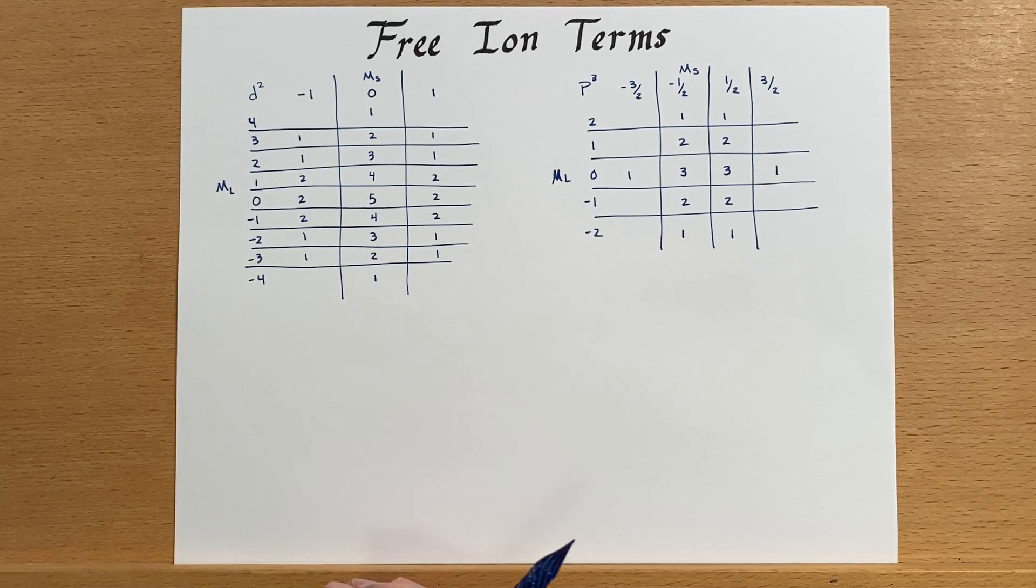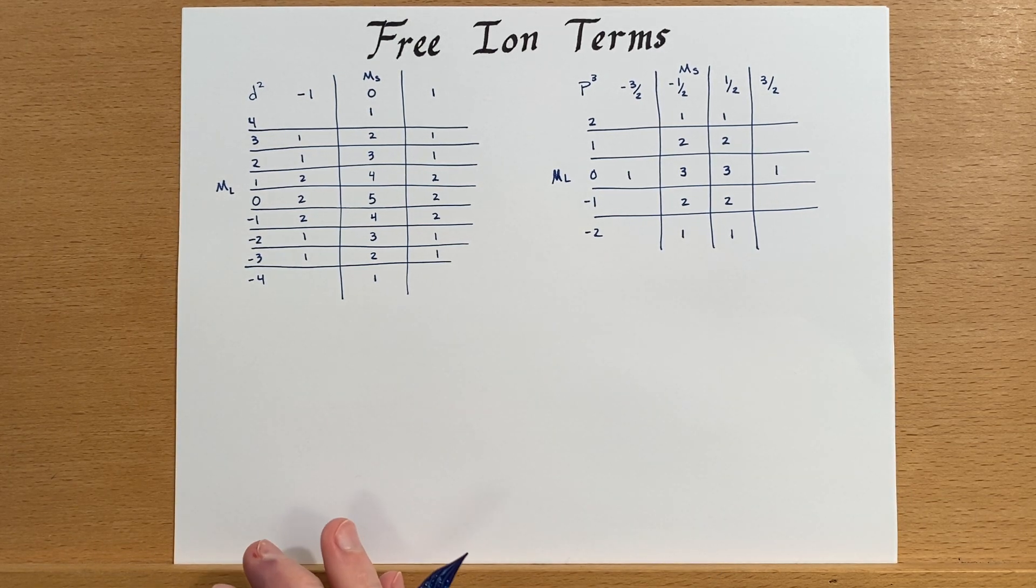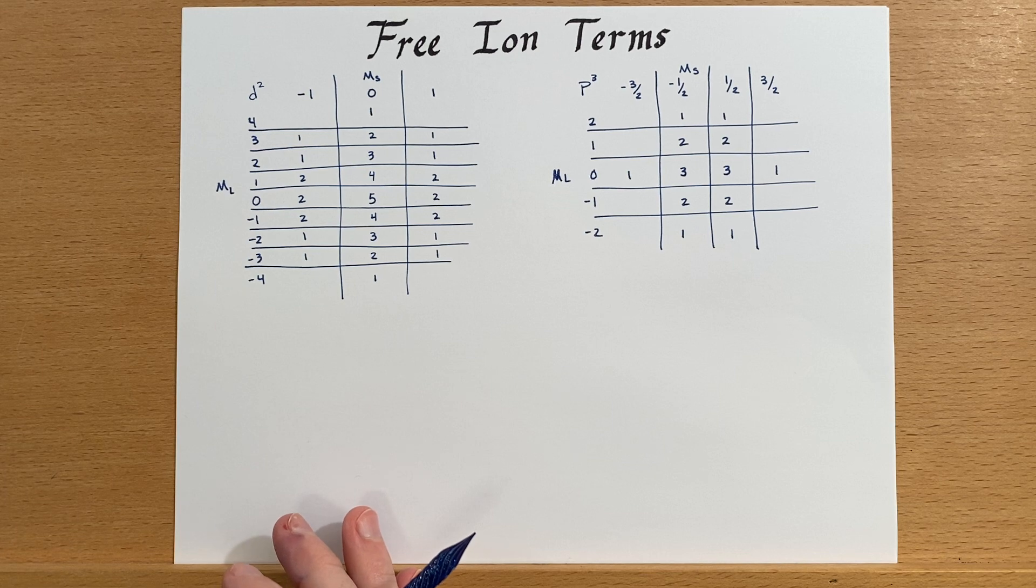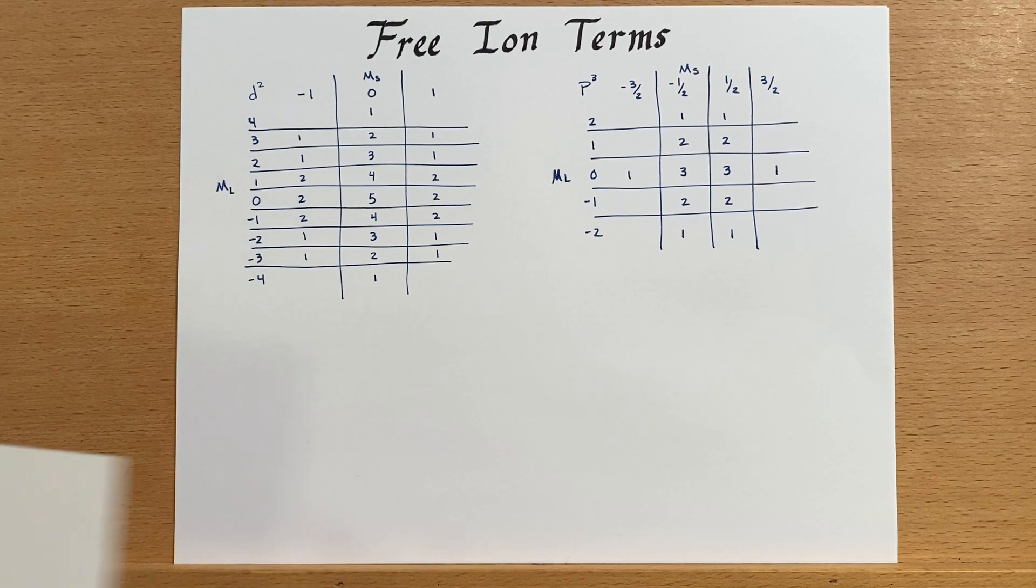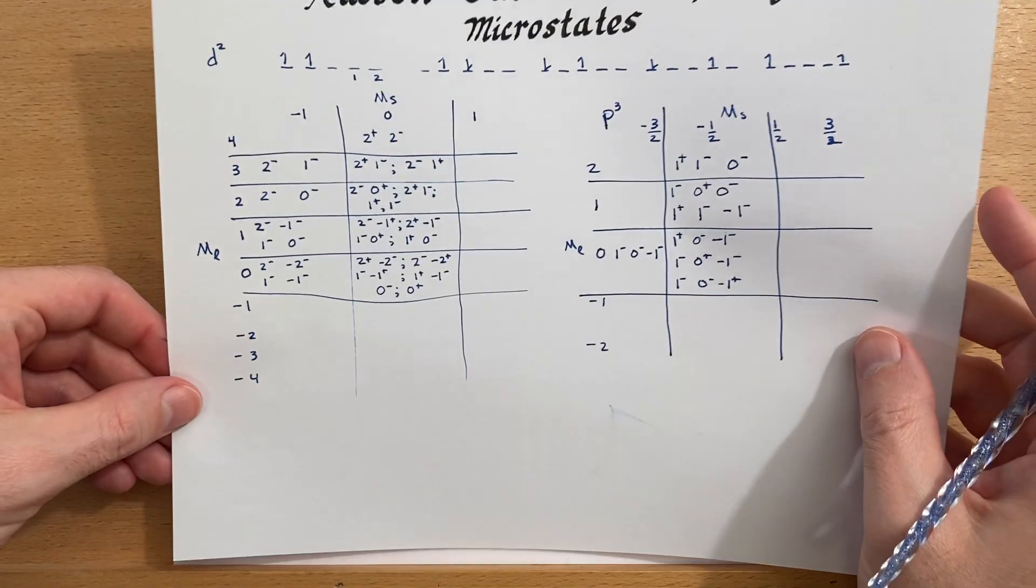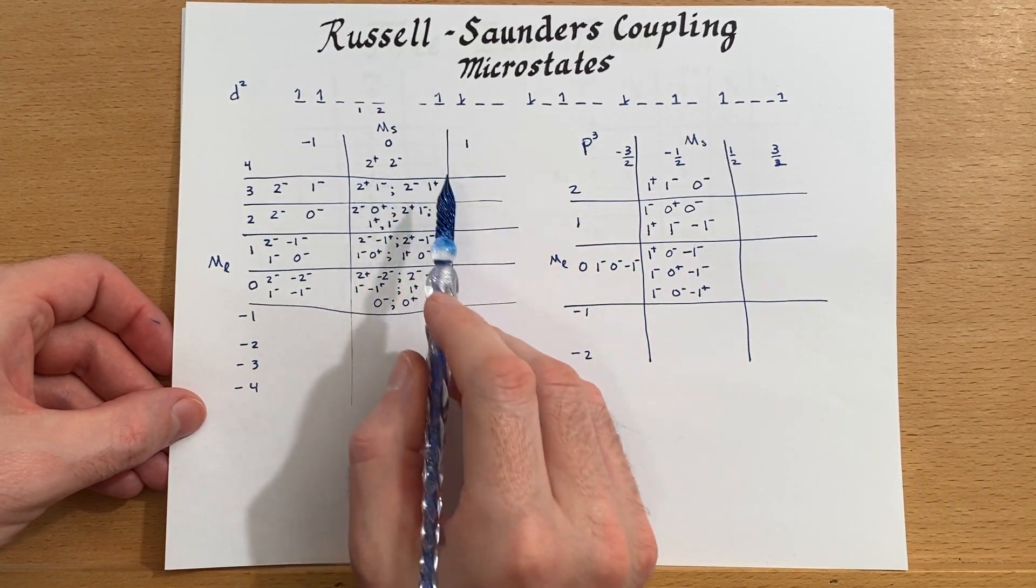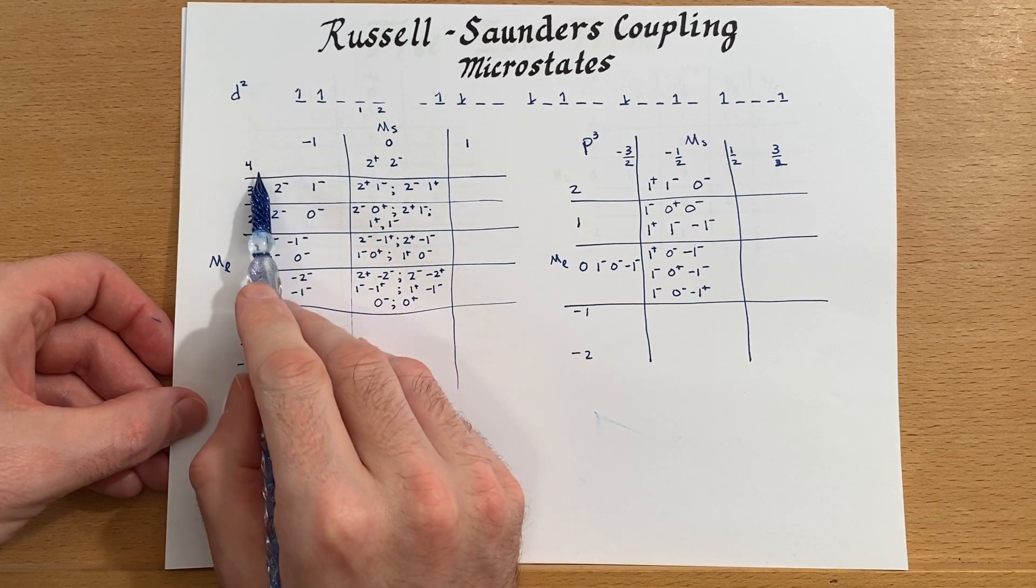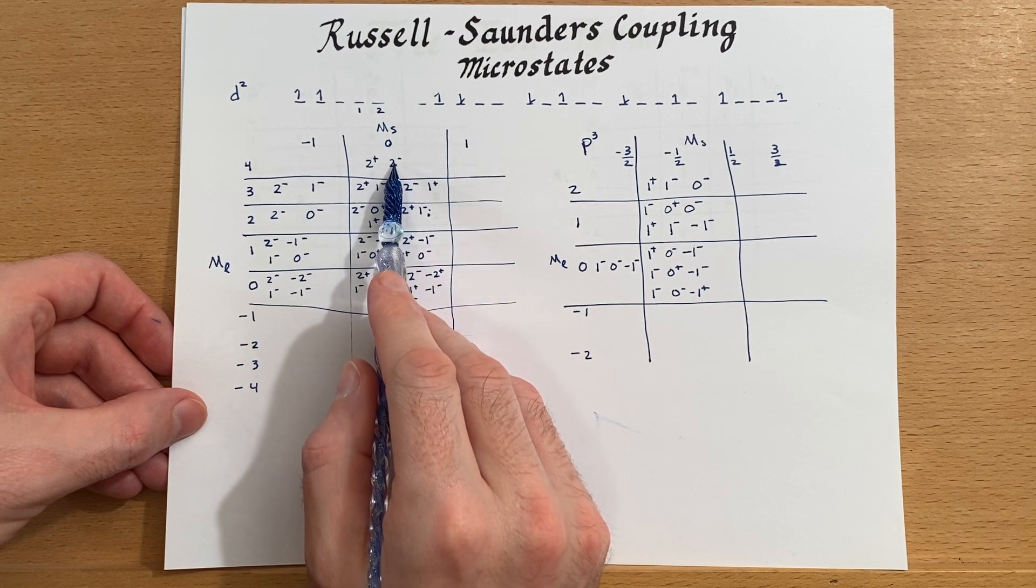Free ion terms can be pulled out from the number of microstates that we saw in the Russell-Saunders coupling. So if we just briefly look back at that sheet here, you'll notice that there's one state that has the combination of an M sub L being four and spin being zero.